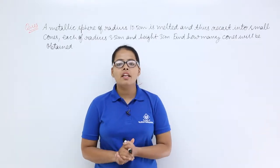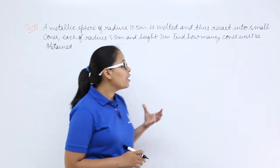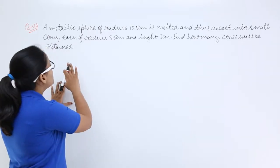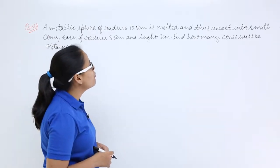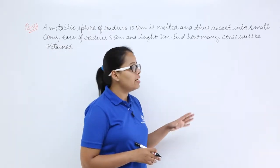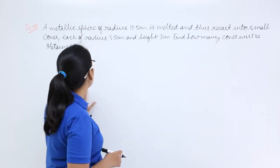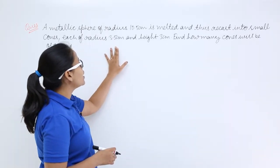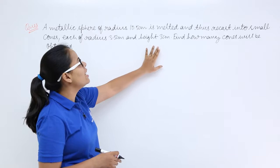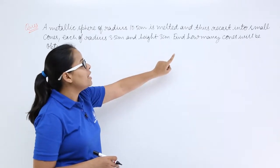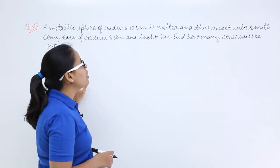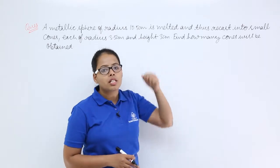Hey guys, let's understand this problem on sphere. Here this problem says a metallic sphere of radius 10.5 cm is melted and recasted into small cones, each of radius 3.5 cm and height 3 cm. Find how many cones can be recasted from this sphere.